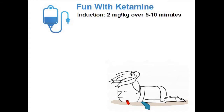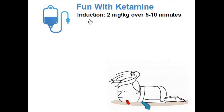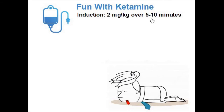The first is an induction dose. Induction means getting the patient knocked out in the first place. Your protocols might vary, but a very standard induction dose would be 2 mg per kg. We give it IV as an infusion, and we spread it out over 5-10 minutes for safety's sake.